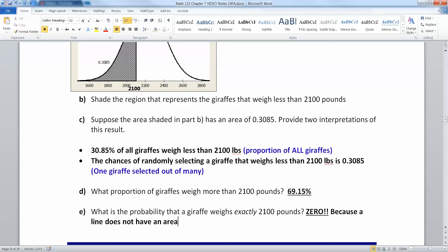Therefore, on a continuous distribution which this is, the probability of an exact value will always be zero.